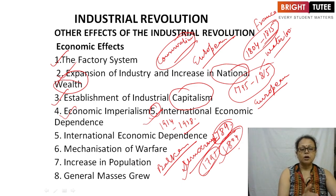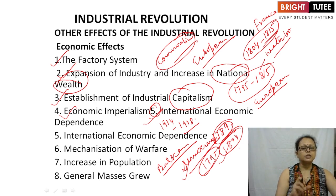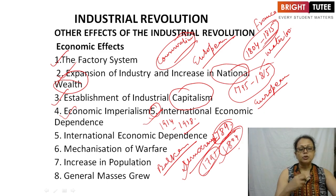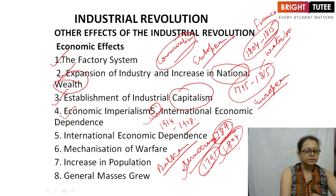The industrial countries depended on countries producing raw materials. In Britain, as most of the population was now engaged as industrial workers, there was a shortage of food grains. By supplying manufactured goods, they imported food grains. The sixth point is mechanization of warfare — one of the most important impacts of the industrial revolution was the development of new and efficient mechanized weapons.